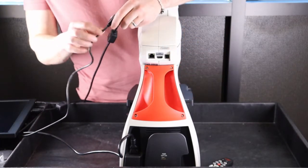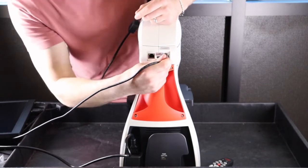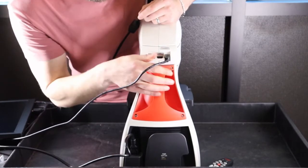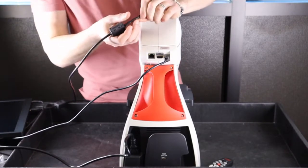To power the camera, take the USB cable and plug it into the USB port. Take the other end, plug it into the wall adapter, and plug it into an outlet for power.